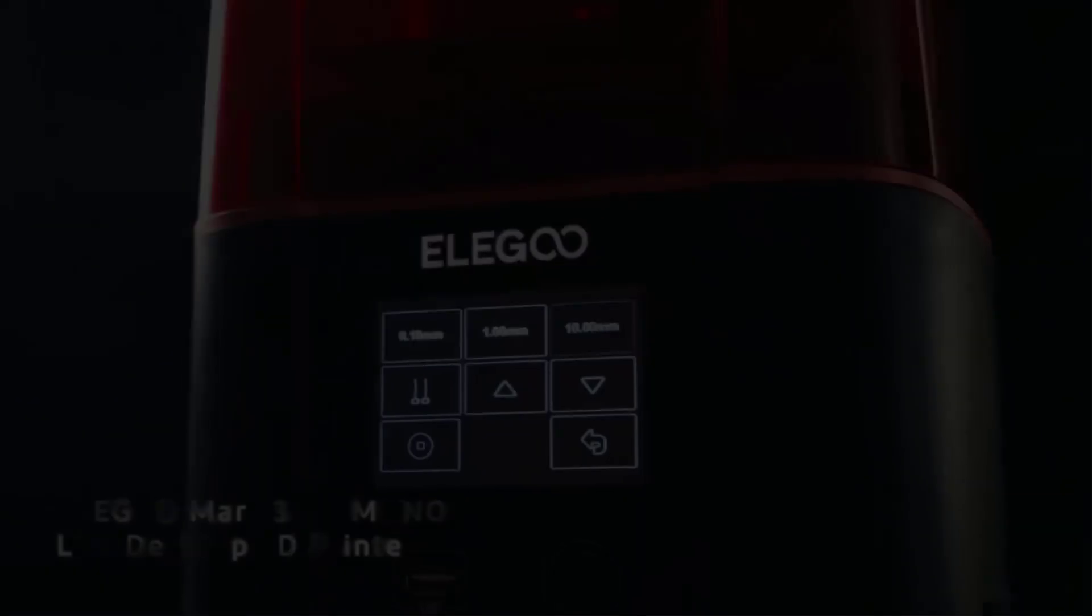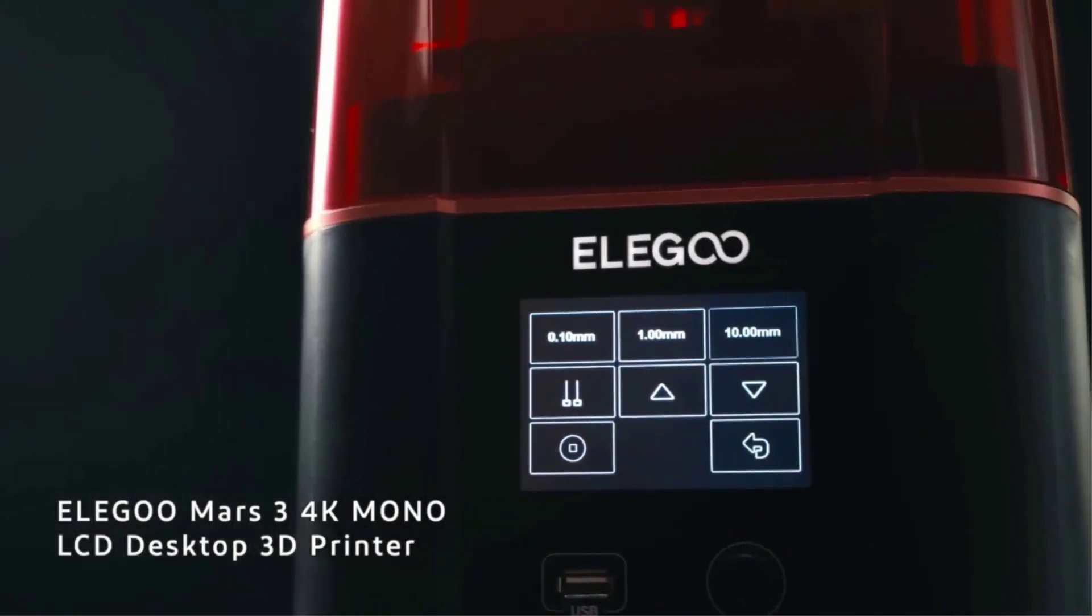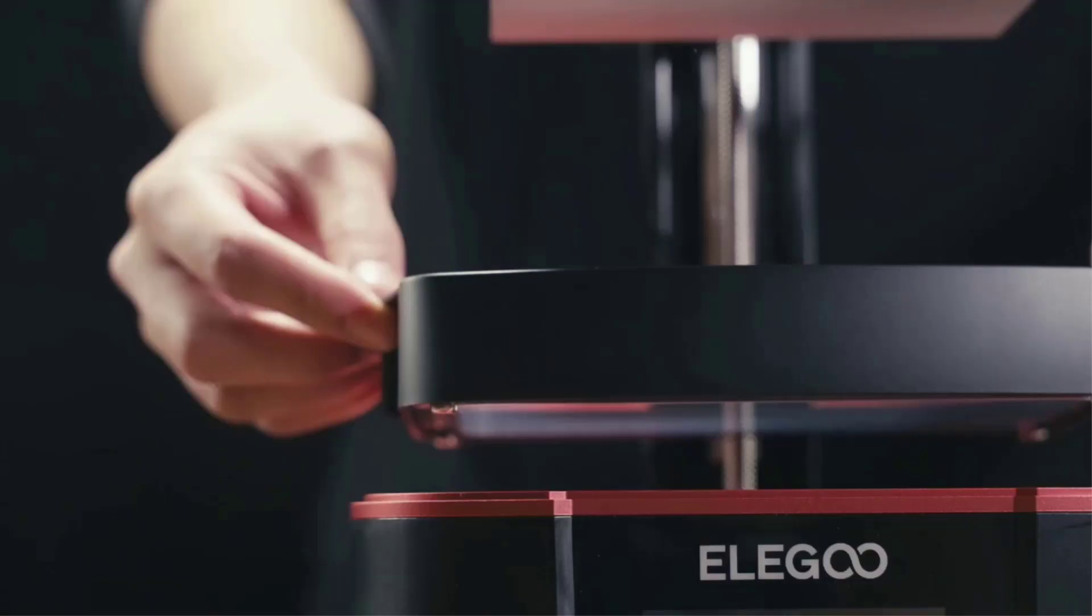Likewise, the Cobb UV LED light source provides optimal heat dissipation with a high luminous maintenance rate and uniform light emission to ensure an even print every time.